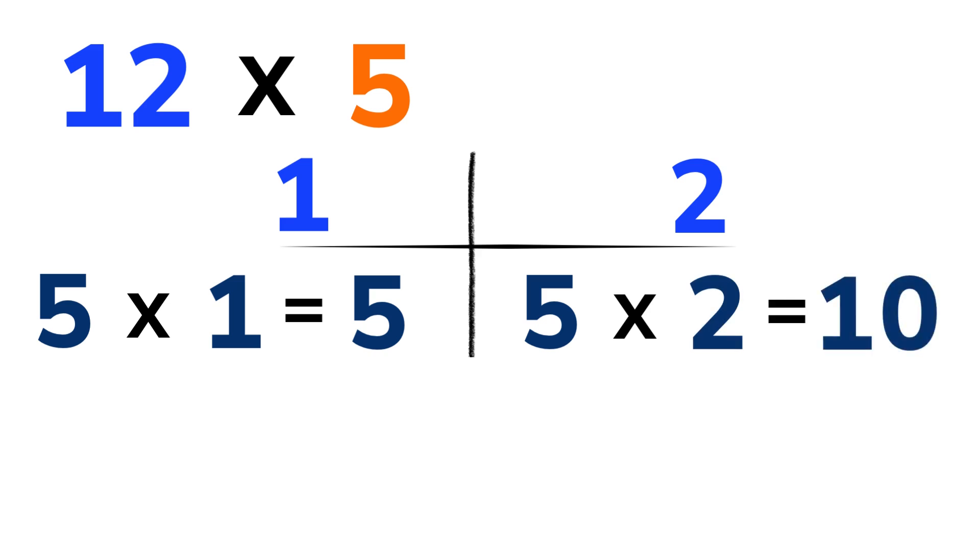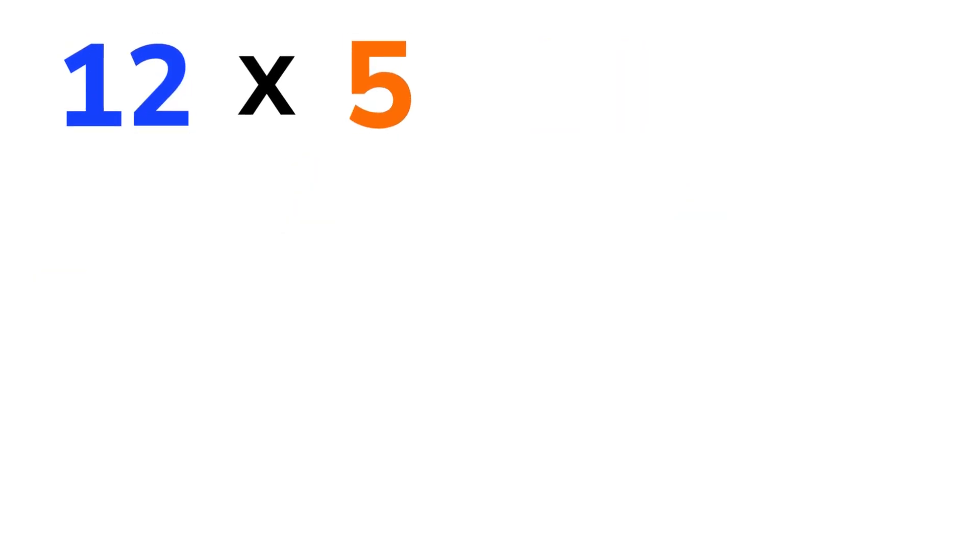Here's the magic move. From the unit digit's result, which is 10, take only the unit digit, or say the last digit, so write 0. Then take the 10s digit of that answer, which is 1, and add it to the result of the 10s digit, which was 5. So 5 plus 1 equals 6. Now write the 6 in the 10s place, and the 0 in the unit place. Boom! 12 times 5 is equal to 60.